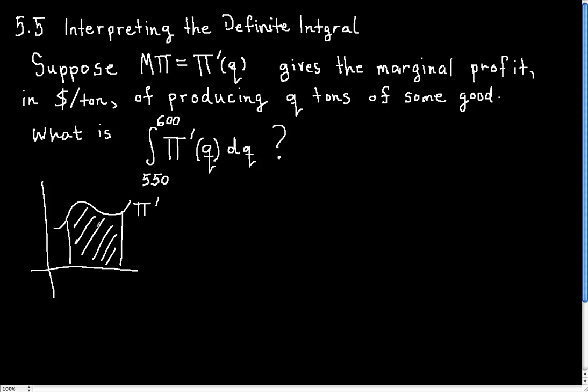So I have to think about what does it mean for this area to exist? What is it? Well, if I take one box of it, what are its units in? And here's how I interpret this: π′ is in dollars per ton.